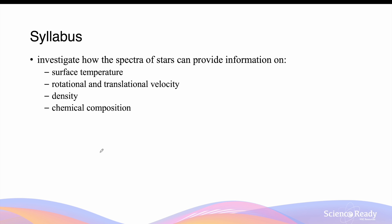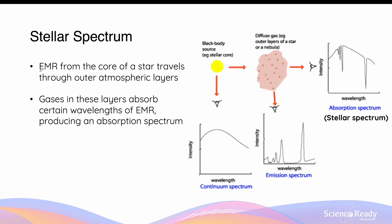This video is on the spectrum of stars. Electromagnetic radiation, or EMR for short, from the core of the star where it's been produced will travel through the outer layers before it propagates through the universe and reaches Earth. Elements in the form of gases in these layers will absorb certain wavelengths or frequencies of this EMR, producing what we see as an absorption spectrum.